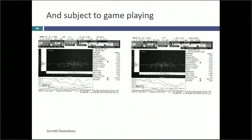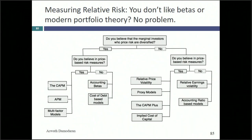For example, Bombardier — the Canadian counterpart to Embraer — shows very different betas depending on whether you run against the Canadian or U.S. index, whether you use weekly or monthly data, and different time periods. So I'm going to give you a way of estimating betas that is not dependent on one slice of history and one regression. But before I do that, I want to deal directly with something that people have an issue with regarding betas in general.